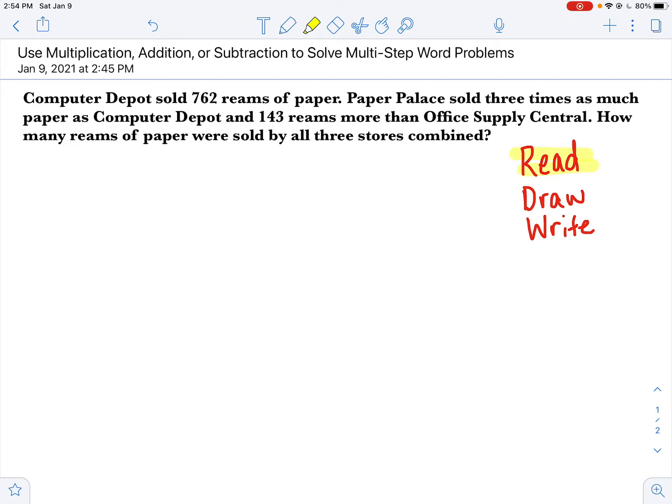So here is the problem for today. Computer Depot sold 762 reams of paper. Paper Palace sold three times as much paper as Computer Depot and 143 reams more than Office Supply Central. How many reams of paper were sold by all three stores combined? Whoa, that is a lot of information that we just got in two sentences. So let's break this down a little bit.